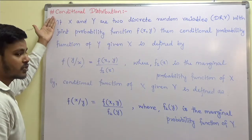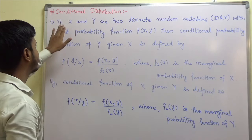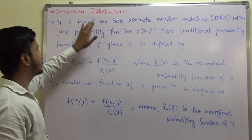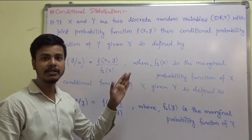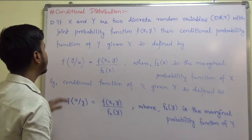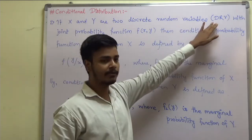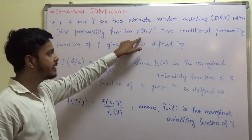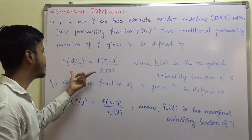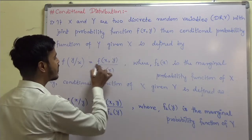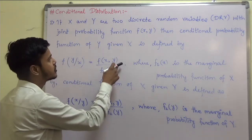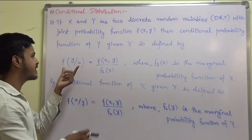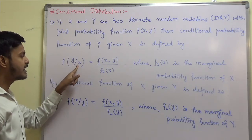So let us see what this conditional distribution is. In the conditional distribution, we will again be having two random variables. We are going to define it first for the discrete random variable and then for the continuous random variable. If X and Y are two discrete random variables, denoted as DRV, with joint probability function f(x,y), then the conditional probability function of Y given X is given by f(x,y) divided by f1(x). Here f(x,y) is the joint probability function, f1(x) is the marginal probability function, and the result is the conditional probability function of Y given X.